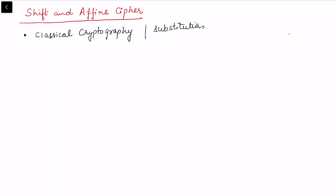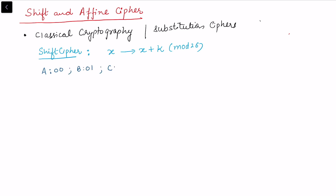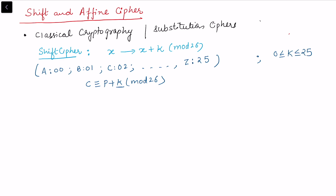In the shift cipher, a letter is replaced by another letter by adding a certain key k mod 26. We write the alphabets as numerical digits: A is 00, B is 01, C is 02, continuing up to Z as 25. So the ciphertext is congruent to p plus k mod 26, and the key k can take any value between 0 and 25, giving 26 possibilities.